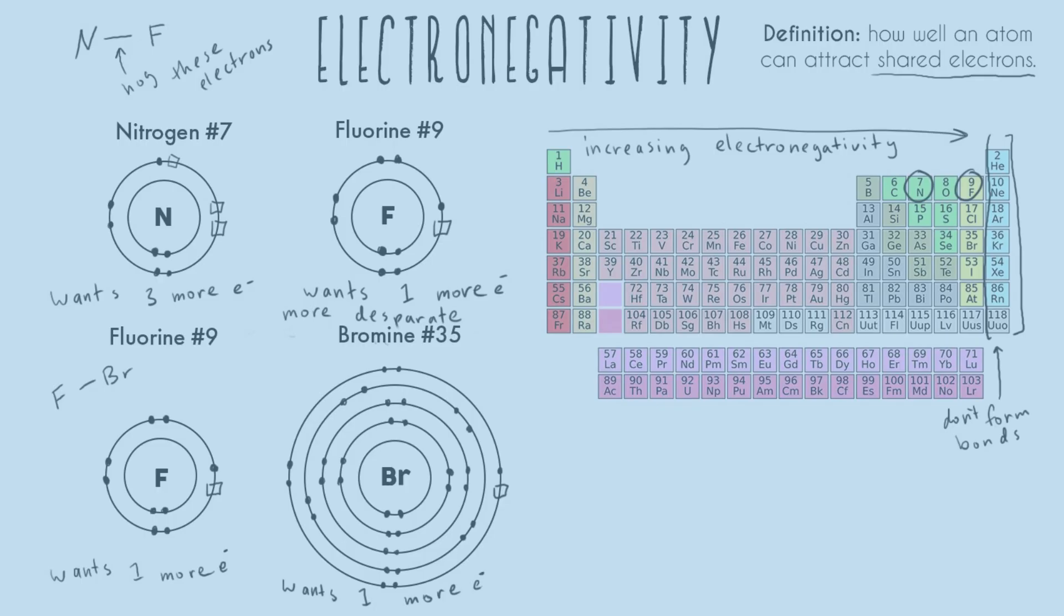And so if you think about where bromine's protons are, they are so many layers away from any electron that it could get, right? We have already one, two, three, four, five orbitals that have electrons in them. And so even though we're trying to get more electrons, all of bromine's positive charges, which are how we're going to kind of trap those negative electrons, they're buried, they're shielded under all of these levels of electrons already.